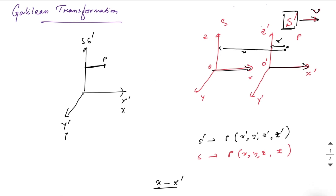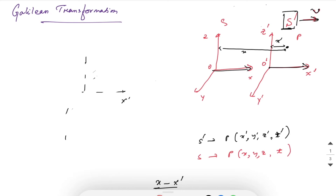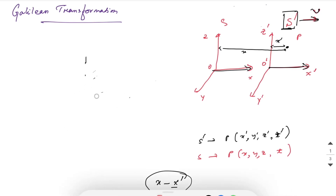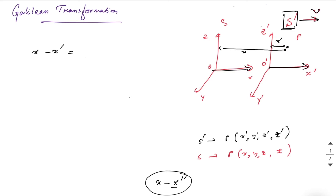When S and S' were at the same position, x and x' were equal. As S' moves, the distance traveled by object P is x minus x'. We know distance equals speed times time, so with speed v and time t, this gives x minus x' = vt.